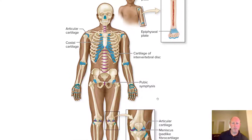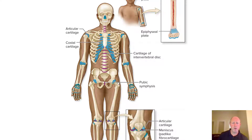Hyaline cartilage is found at significant locations like the mobile joints — the shoulder and the hip. Specifically where the femur meets the pelvis, and where the humerus meets the scapula at the glenoid fossa. Note that this picture is not drawn to scale — the glenoid fossa is significantly smaller than the humeral head. Overall, there is much more hyaline cartilage prevalent throughout the body than fibrocartilage.